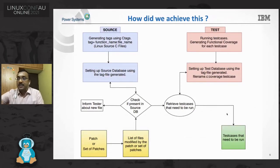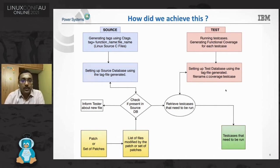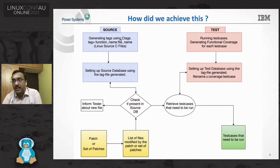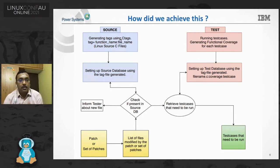So how did we achieve this? Here is the overview of the whole project. It is divided into two different parts: creation of the databases — source and test — and then passing the patch or patch set to get the required output. For the source database creation, we used ctags, a tool which helps in code maintenance. Ctags creates an index file after running on the Linux source code. Then, parsing this index file, we pick up the function name and the file name and store it in the database.